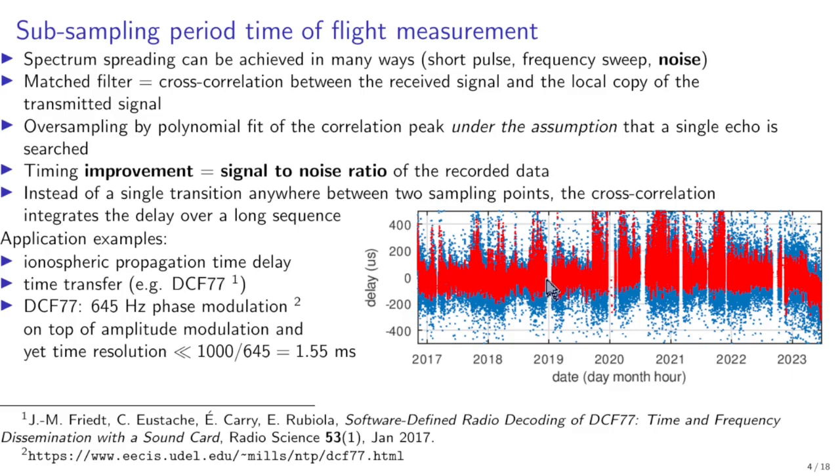So the cross correlation will be the core processing step using oversampling and polynomial fit. And what you see in this example is the measurement from Maindflingen DCF 77 to Besançon 400 kilometers away since end of 2016. DCF 77 has two modulation schemes, one amplitude modulation and the historic modulation, and in 1988 the phase modulation was added and this phase modulation spreads at 645 hertz, let's say 700 hertz.